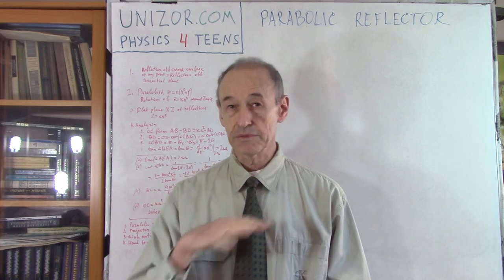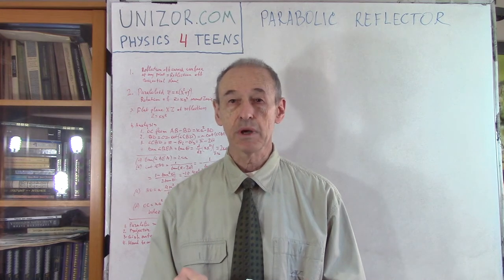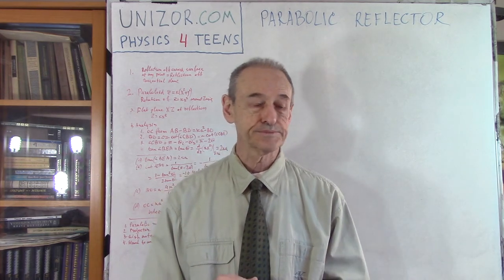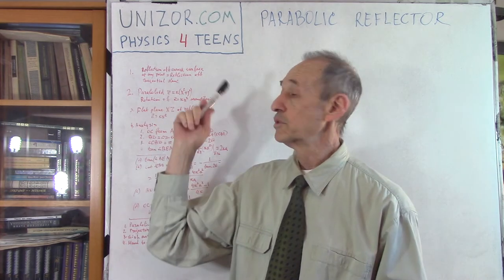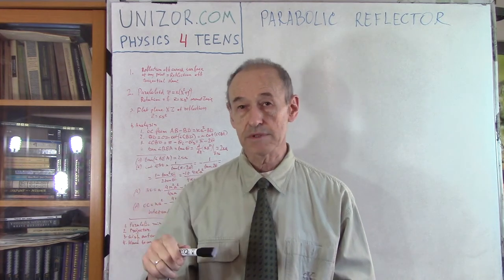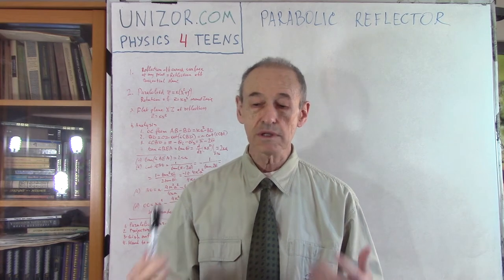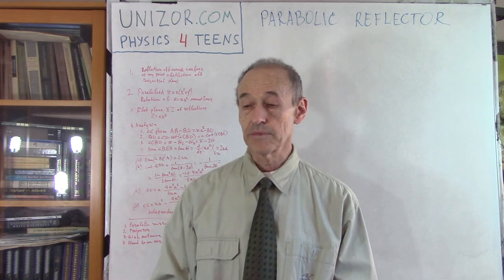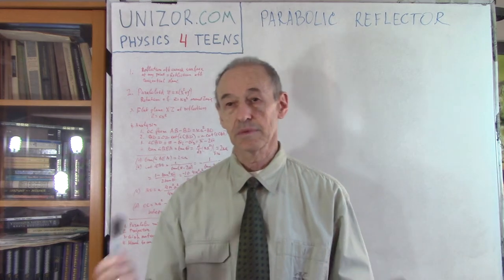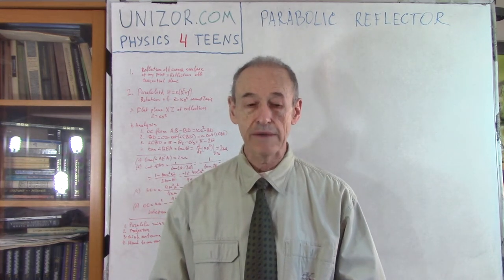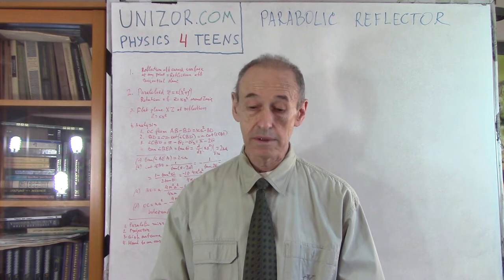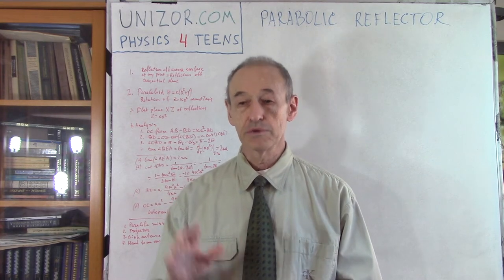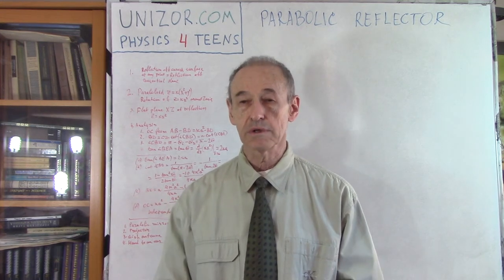The previous lecture was about reflection of the flat surface, and this lecture is about reflection of the curved surface — in this particular case, it's a parabolic mirror. The website unizor.com also contains the prerequisite course Maths for Teens, which contains the knowledge you definitely need to study physics seriously. This is for teens — basically high school and maybe a little beyond — and it's kind of advanced, but still within the reaches of everybody. If you accurately take the course one lecture after another, you will succeed.